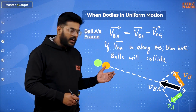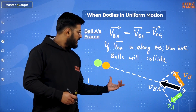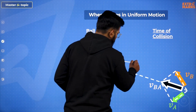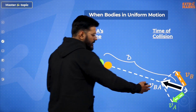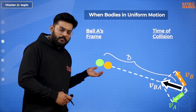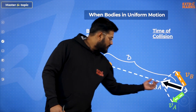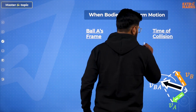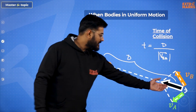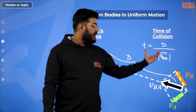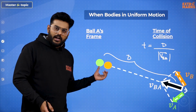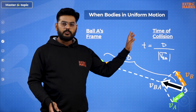This is the observation while placing ourselves in ball A's frame. From the ground frame, they will collide at some position. What about the time after which they collide? If we consider the initial distance between the balls to be D, there is no element of acceleration in the relative frame, so time equals distance over speed. Since I am at rest in ball A's frame and ball B moves toward me with velocity VBA, the time of collision is D divided by the magnitude of VBA. After this much time, the balls will collide.